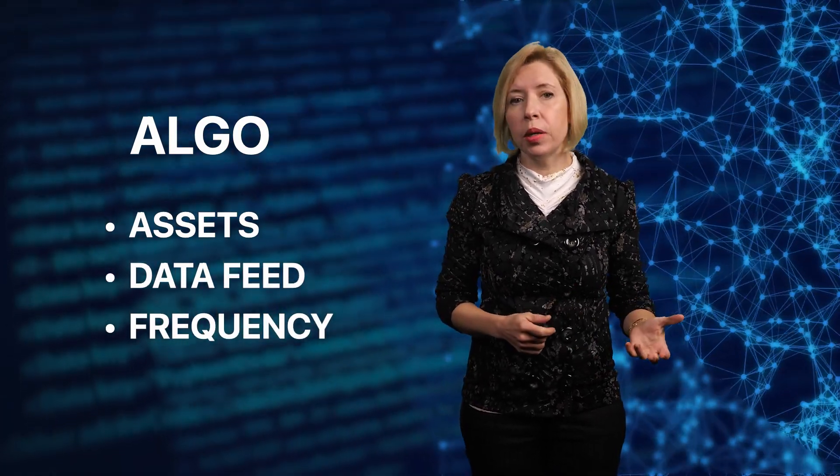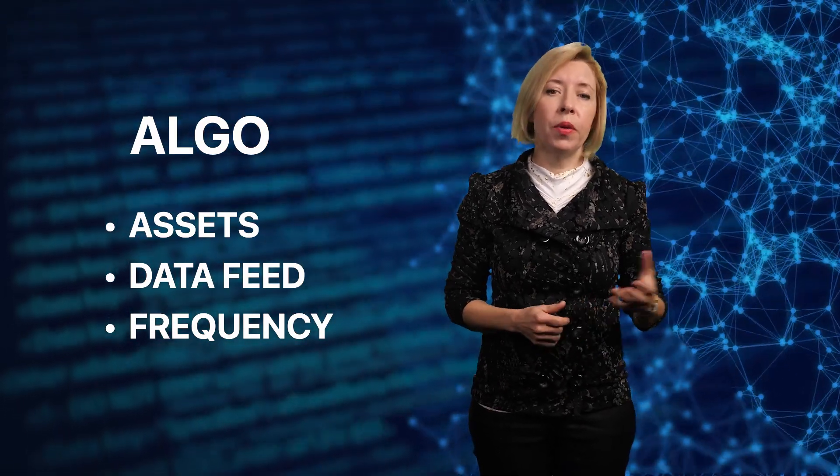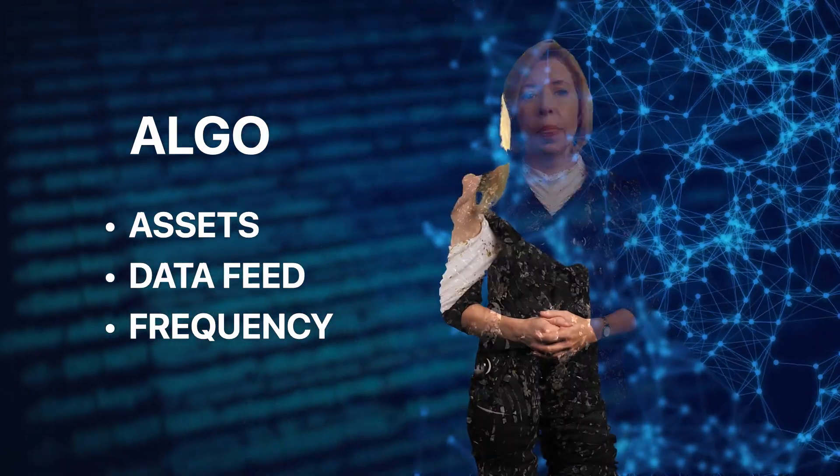I want to give you a feel for what the algorithmic trading world looks like. On the right side are the algorithms. We start with the decision of where to look for trading opportunities — what assets to trade, like crypto pairs, Bitcoin, Ethereum, or maybe fiat, or maybe commodities. Assets contain opportunities.